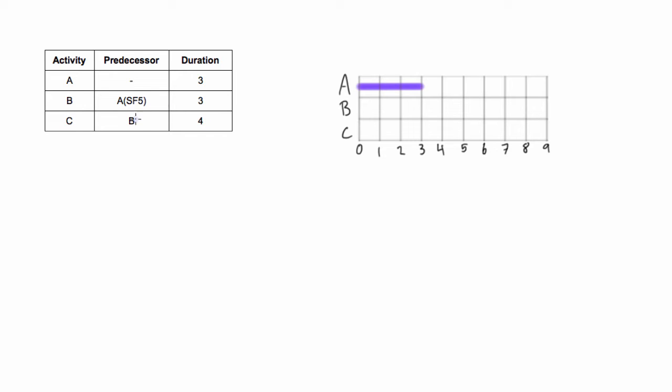Next up we have activity B. Its predecessor is A, but it's a start to finish relationship with a lag of five. That means that B can finish five days after A starts. If it was just a regular start to finish relationship it would just be B can finish when A starts, but that's hardly a realistic thing, so I just put some lag in here for the example.